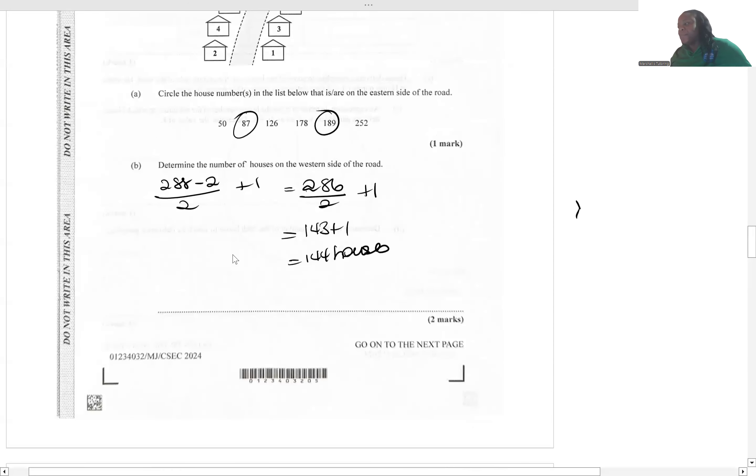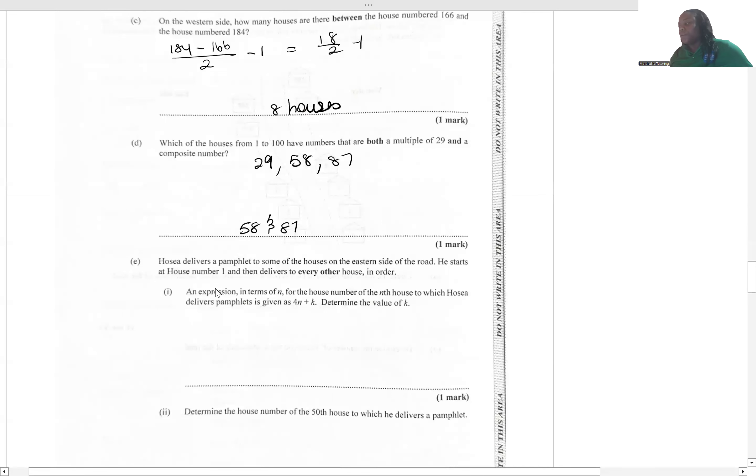We have a little algebra here. Find the value of k. If you look at the formula or the expression that he gave us in terms of n for the number of the nth house, you can look back at the little diagram that they gave us. We're just going to formulate our own formula.